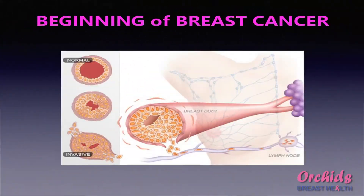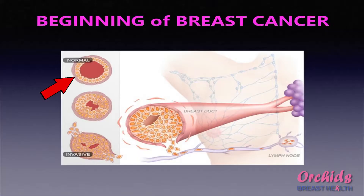Now let us understand how breast cancer begins within the ducts of the gland. This is a normal duct, showing a basement membrane — the wall of the duct — and the internal cells of the duct. These ductal cells are normal.